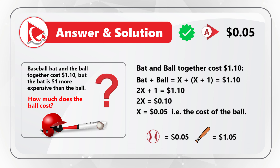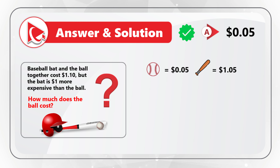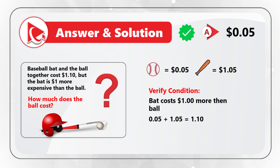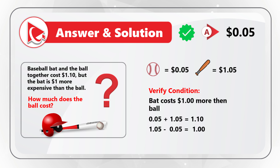The cost of the bat is $1.05. Let's verify the main condition: the bat costs $1.00 more than the ball — which is correct. $0.05 plus $1.05 equals $1.10, and $1.05 minus $0.05 equals $1.00. So the correct answer is choice A — cost of the ball is $0.05. Hopefully you've nailed this problem and now know how to solve similar problems on the test.